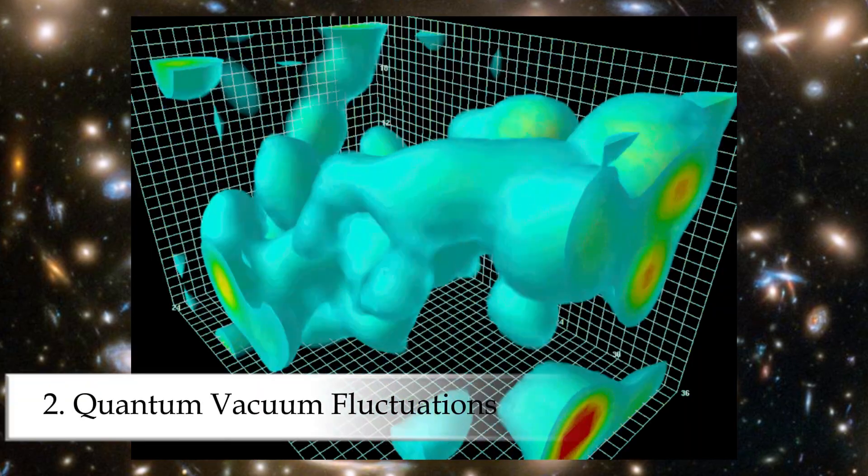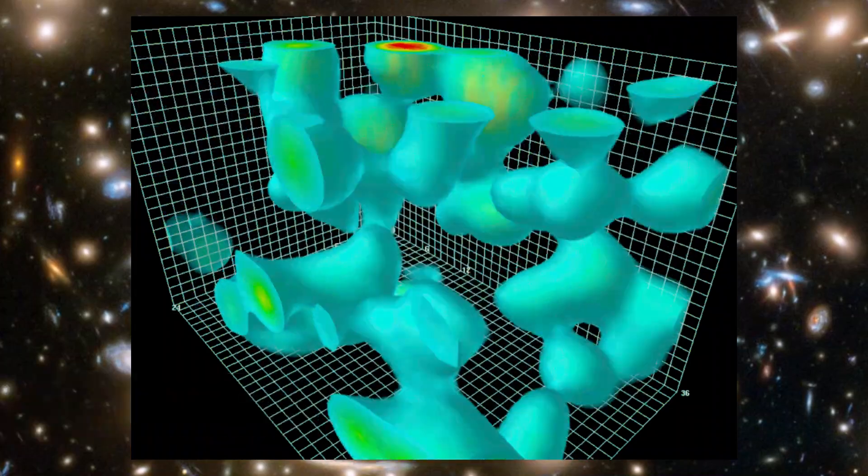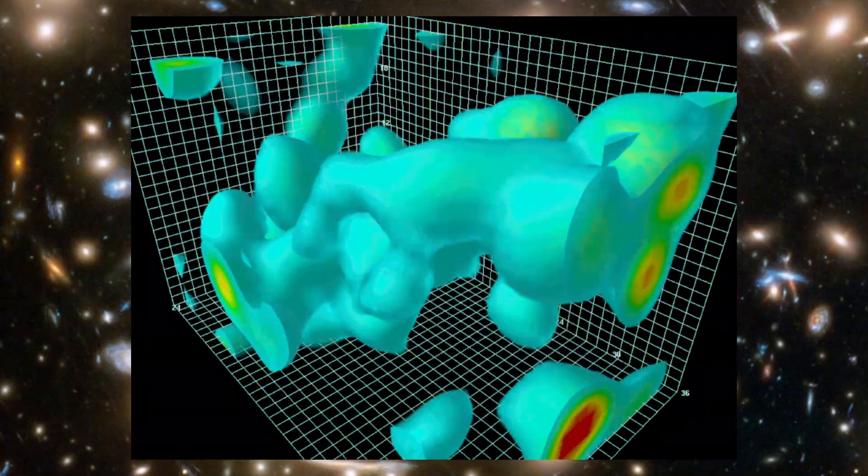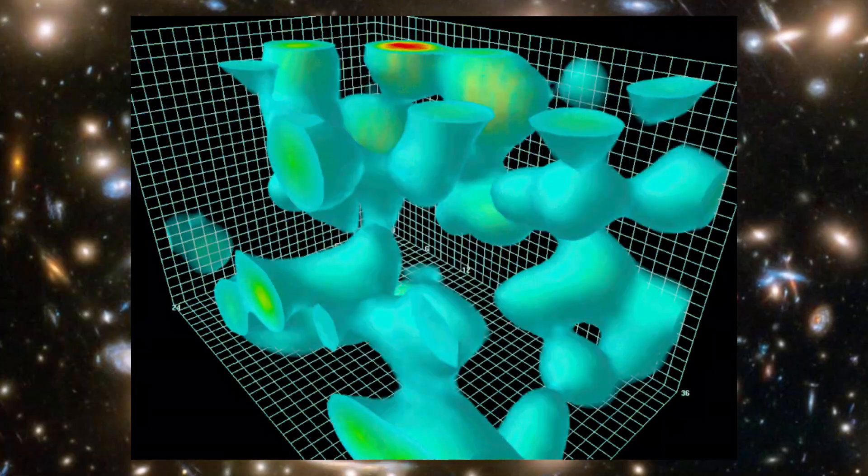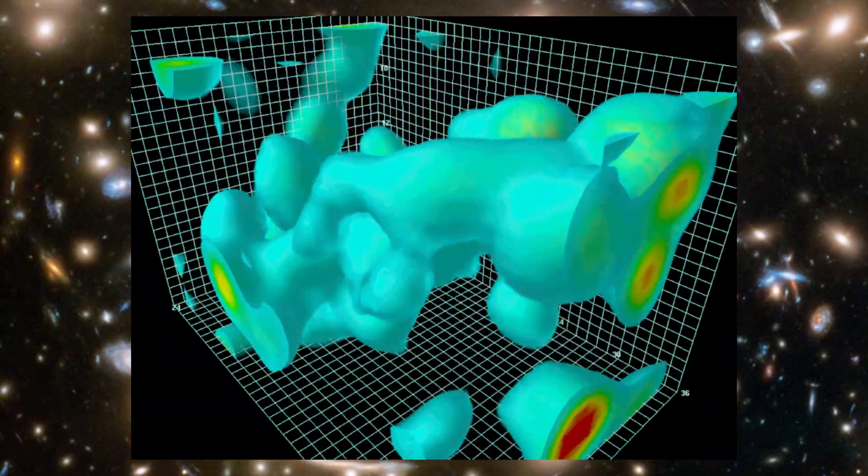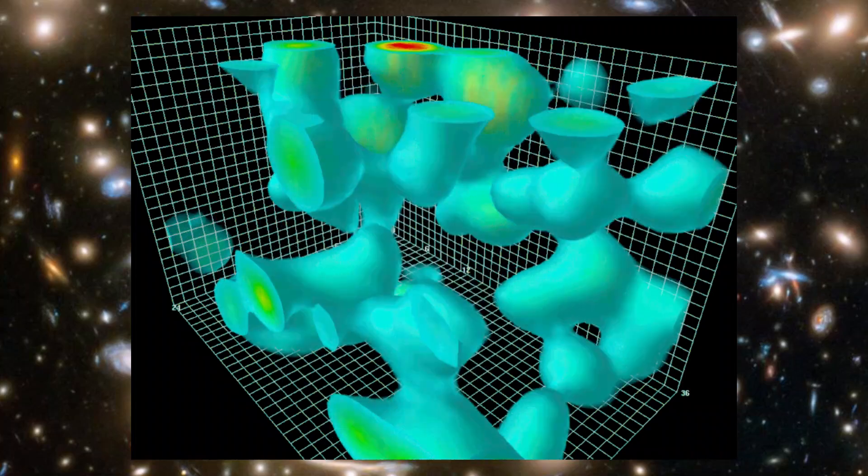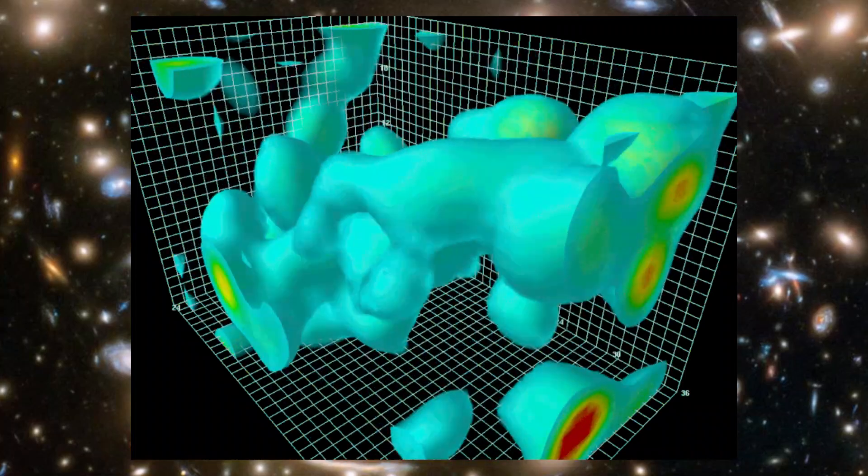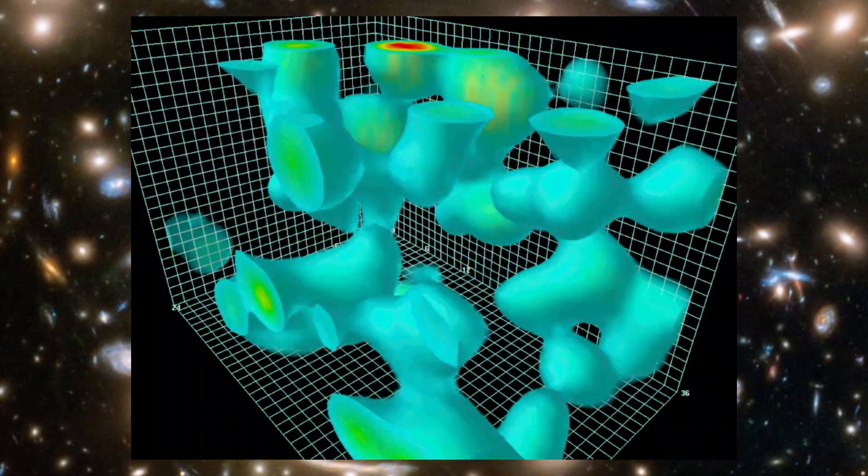Number two, quantum vacuum fluctuations. In quantum field theory, even a perfect vacuum is buzzing with activity. Particles pop in and out of existence for tiny fractions of a second. These are virtual particles, and they're constantly flickering in and out of the quantum foam.